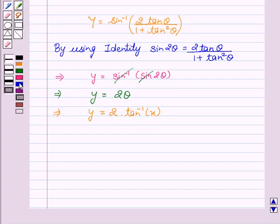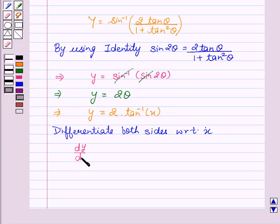Now, we will differentiate both sides with respect to x. We get dy by dx equal to 2 into d by dx of tan inverse x.